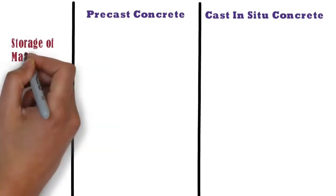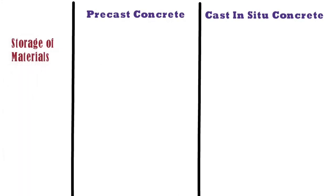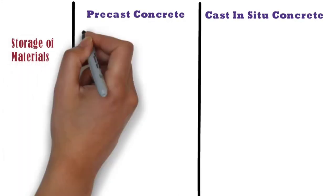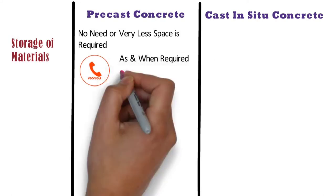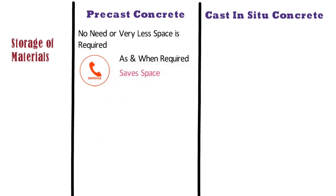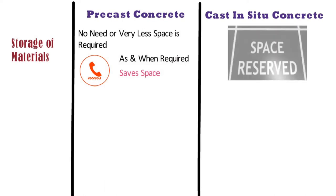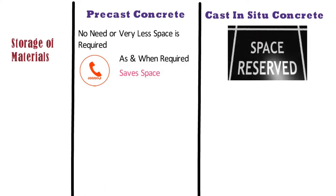In case of the precast method, there is no need or very little space is required for storage of materials and formwork. You can order the stock of precast members from the factory as and when required, so it saves space. Whereas in case of the cast in situ method, you have to keep space reserved for storage of materials.